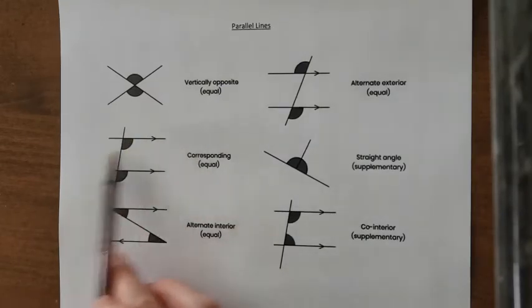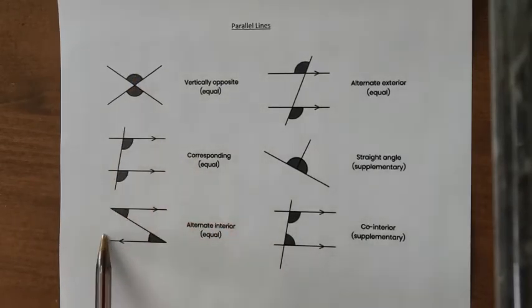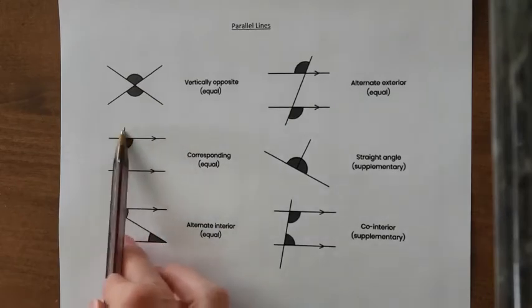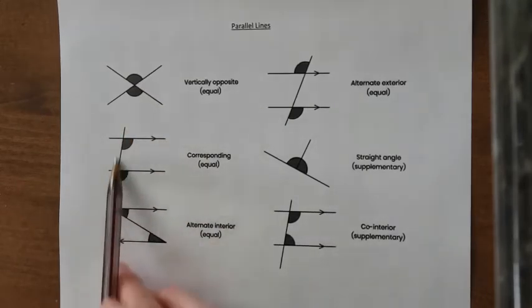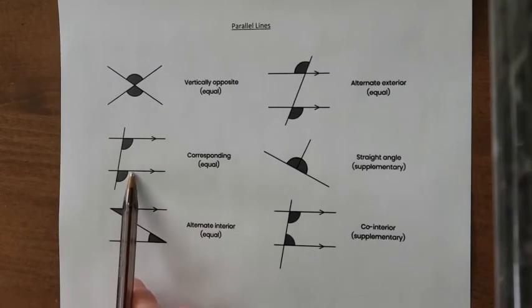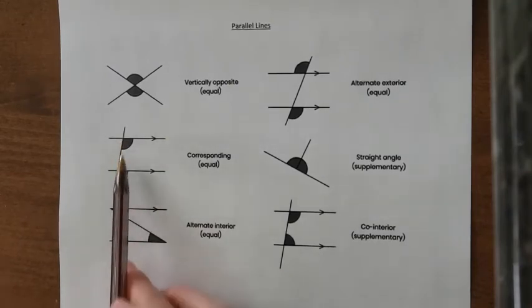Now we have parallel lines. So when we have two parallel lines and a line or a diagonal going through it, and they kind of make this F shape. There's like a capital F right here. These inside angles are the same. They're called corresponding angles.